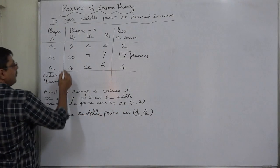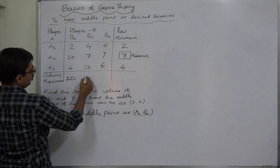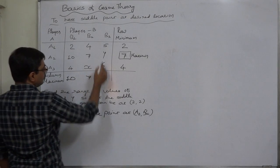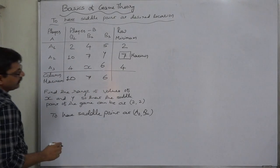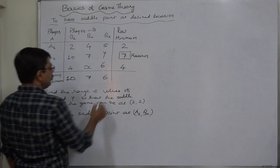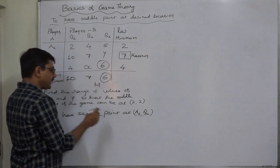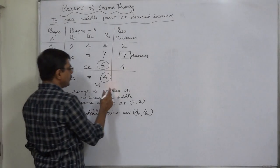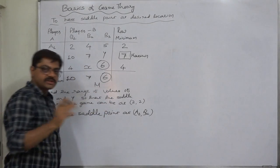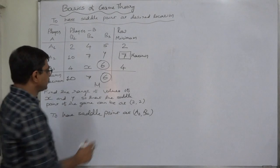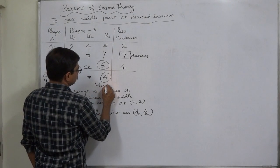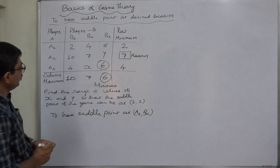Now column maximum. First column has ten, second column has seven ignoring x, and third column has six ignoring y. What is the minimum value out of this? It is six and not seven. So at present the saddle point is not at A2 B2, or say the game has no unique saddle point.